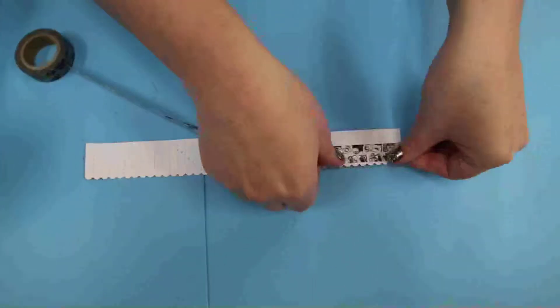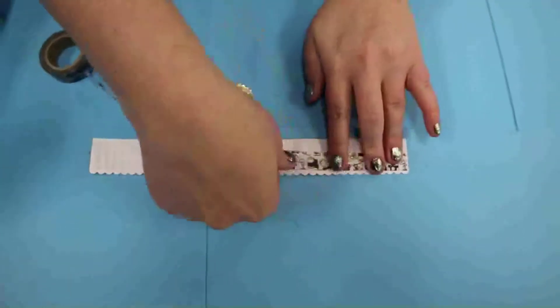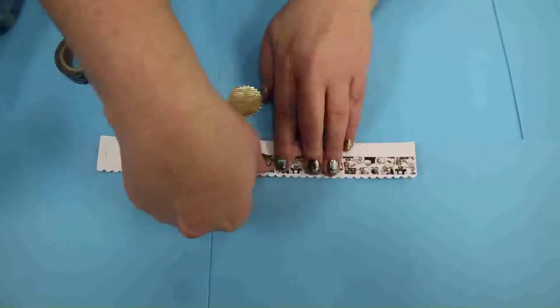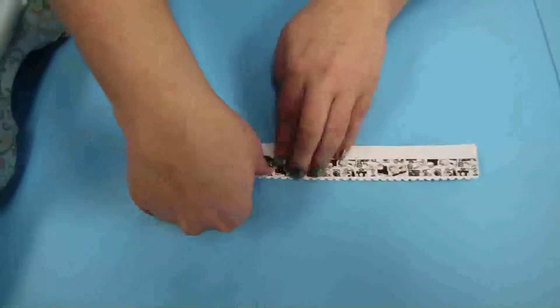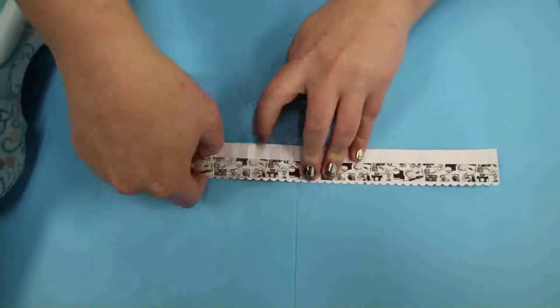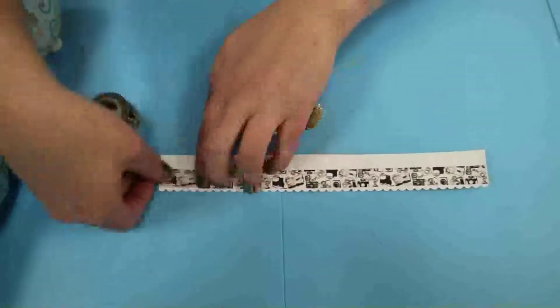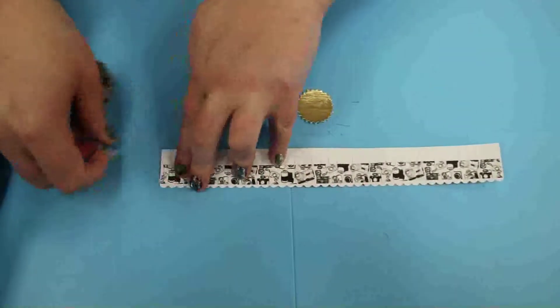You're going to take your washi tape and I like to run it along the side that is going to be towards the outside, so that's going to be the scallop side. And what this is going to do is it's going to give those little perforated lines a little bit of a reinforcement just to make them stronger so that they don't rip.